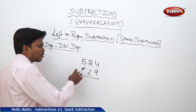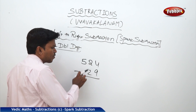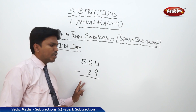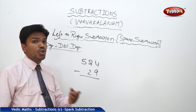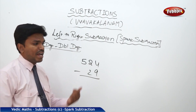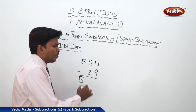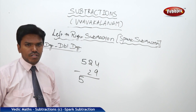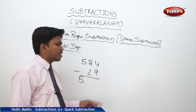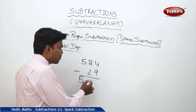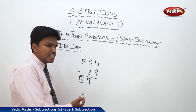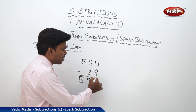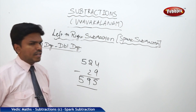Suppose I have to drop this 5 as it is. You might say the answer is 5 only. And 2 minus 3 — you will think it has matched. So what you will do? You will drop 5 as it is. And 2 minus 3 is how much? Zero.